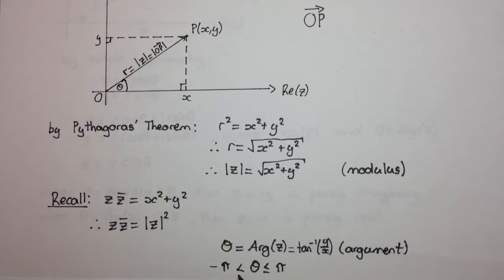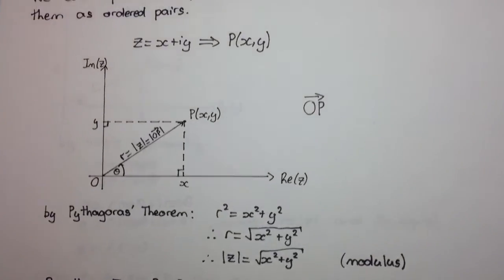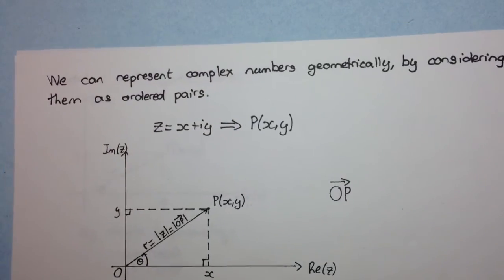So the reason this is not less than or equal to here is because pi and minus pi is the same thing. Okay. So let's have a look at some further stuff here.